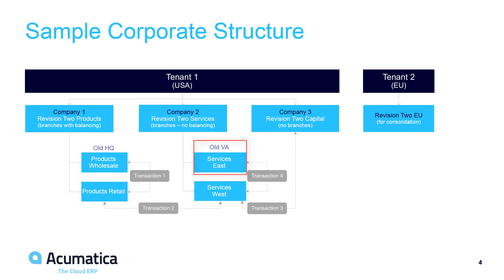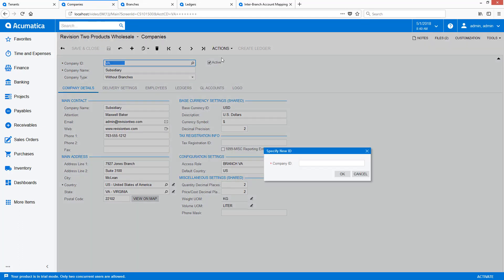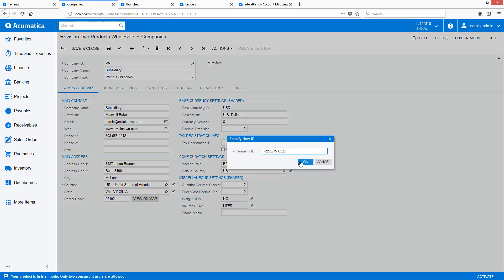After adding the new branch, I navigate to the Inter-Branch Account Mapping screen to set up automated due-to and due-from processing for the current branches. Next, I want to convert my VA company to a company with branches. In this example, my services branches are sales offices which require branch-specific profitability reports, employees, and security. These branches share the same tax ID and the same set of financial reports. Transactions between company 1 and company 2 must create inter-company transactions, and in this diagram only transaction 4 does not require balancing. To set this up, I follow the same process as before, except I change the company type to 'with branches not requiring balancing.'